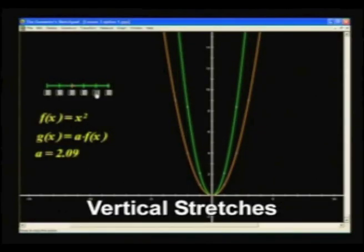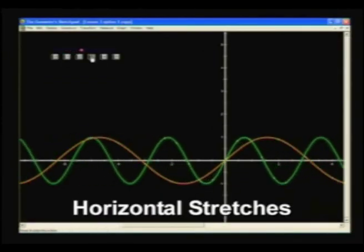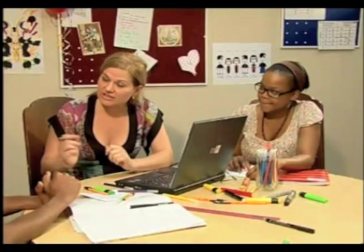There is one last transformation of functions to look at today. They are the vertical and horizontal stretch of a function. This is commonly referred to as enlargement, although it deals with both enlargement and reduction — that is, the stretching and shrinking of functions.